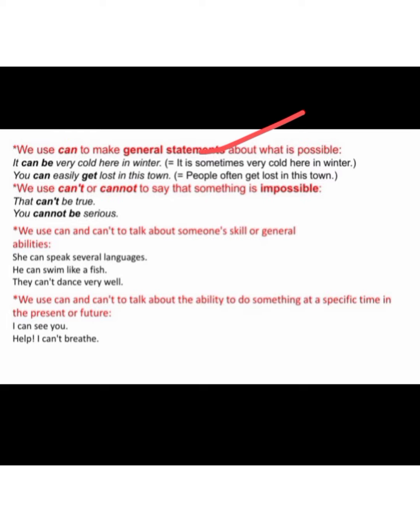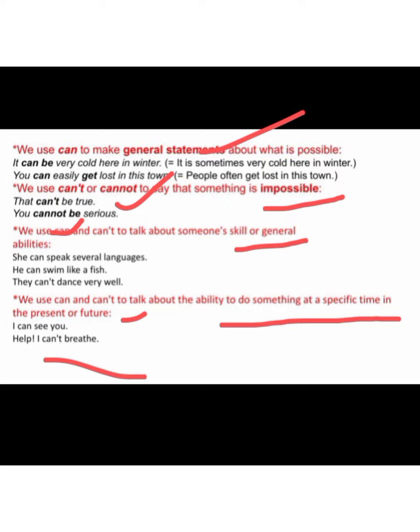We use can't or cannot to say that something is impossible — like 'That can't be true' or 'You cannot be serious.' We also use can, cannot, or can't to talk about someone's skill or general ability: 'She can speak several languages,' 'He can swim like a fish,' 'They can't dance very well.' We also use can and can't to talk about the ability to do something at a specific time in the present or future — like 'I can see you' or 'I can't breathe.'